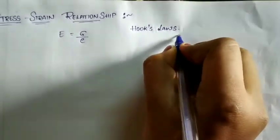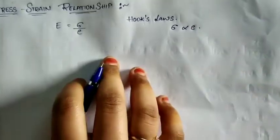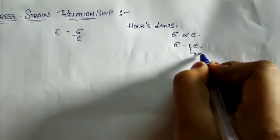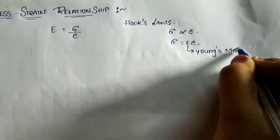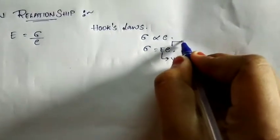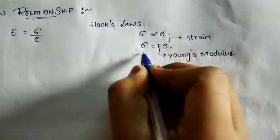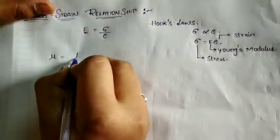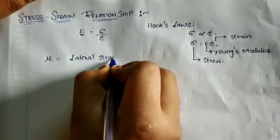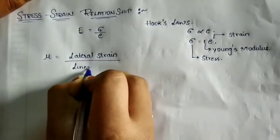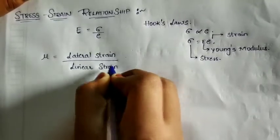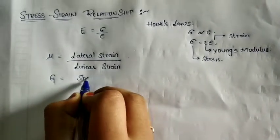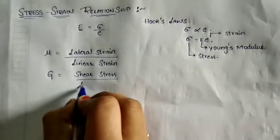By Hooke's law, we know that stress is directly proportional to strain. So sigma is equal to E into epsilon, where E is Young's modulus, also called modulus of elasticity. Another key parameter is Poisson's ratio mu, equal to lateral strain divided by linear strain. Also, modulus of rigidity G is equal to shear stress divided by shear strain.